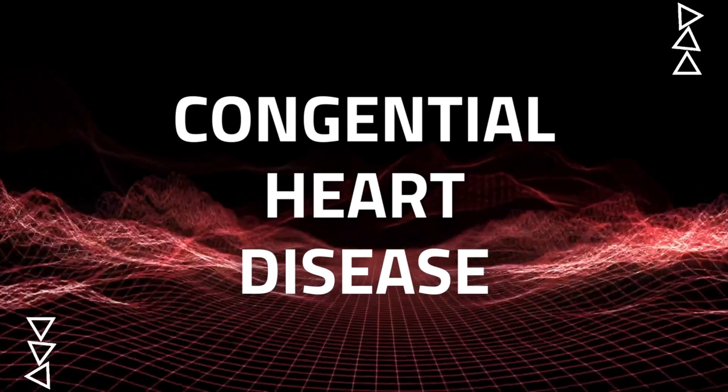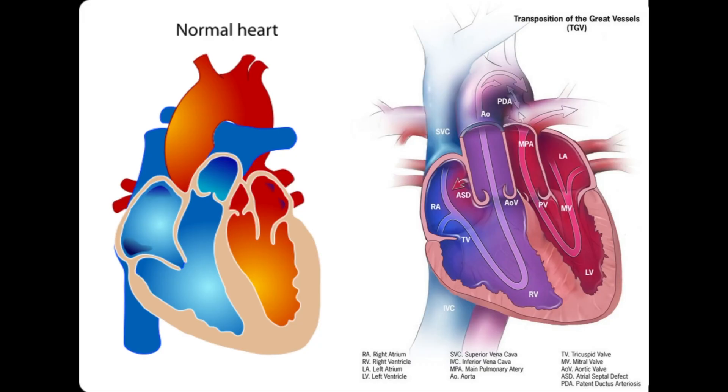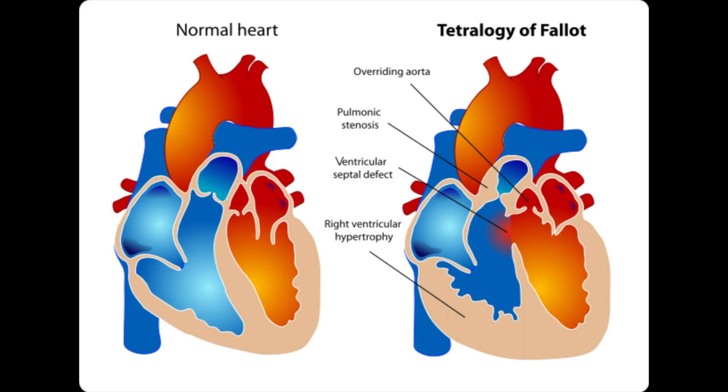Another broad category of heart disease is congenital heart disease — when somebody is born with an anatomic abnormality in the heart. Some of the more common types include an atrial septal defect (ASD), which is a hole in the heart between the left and right atria allowing blood to pass from one side to the other. There's also transposition of the great vessels, where the aorta and pulmonary trunk are flipped toward the wrong circulation, and a constellation of four defects called Tetralogy of Fallot.